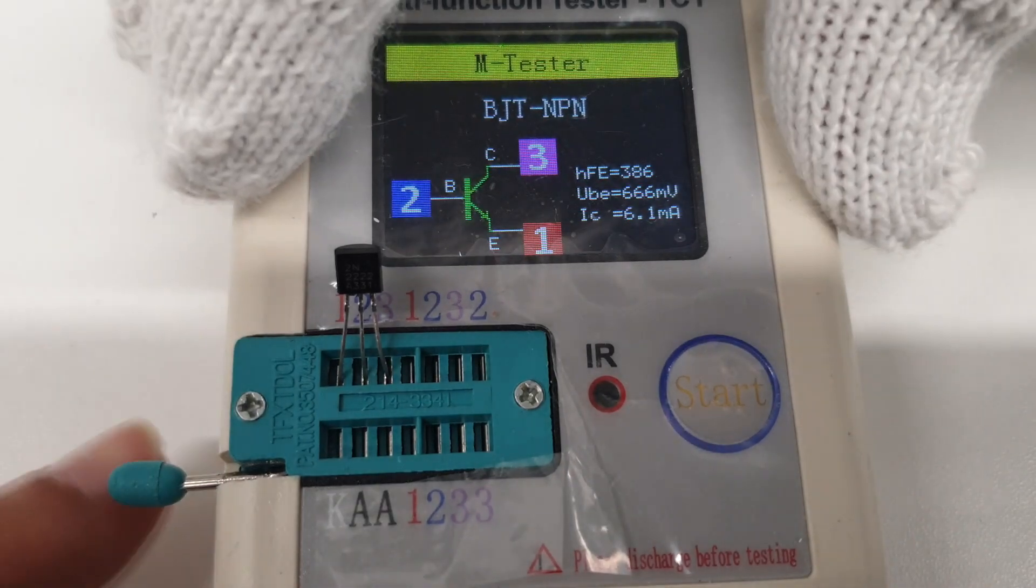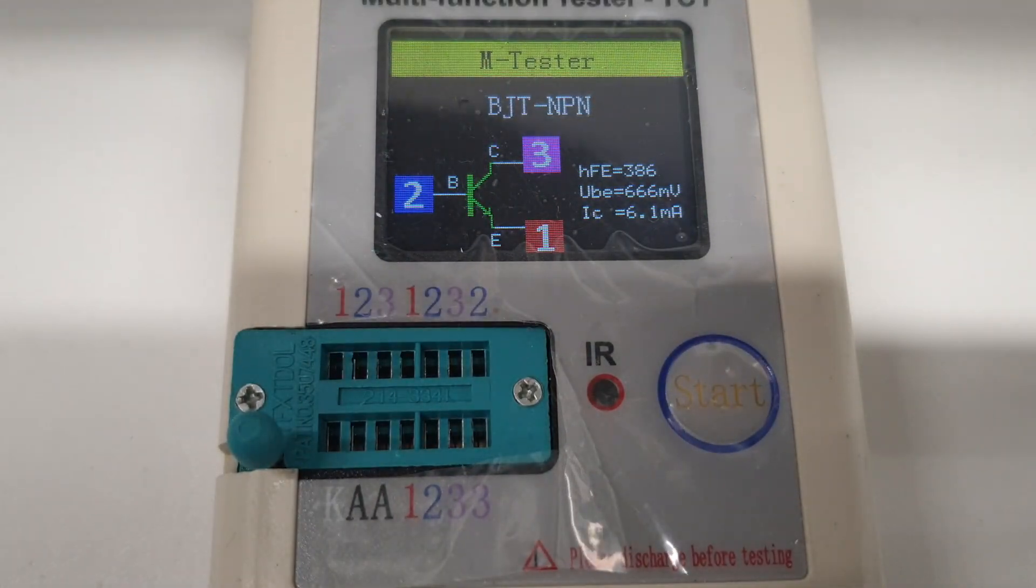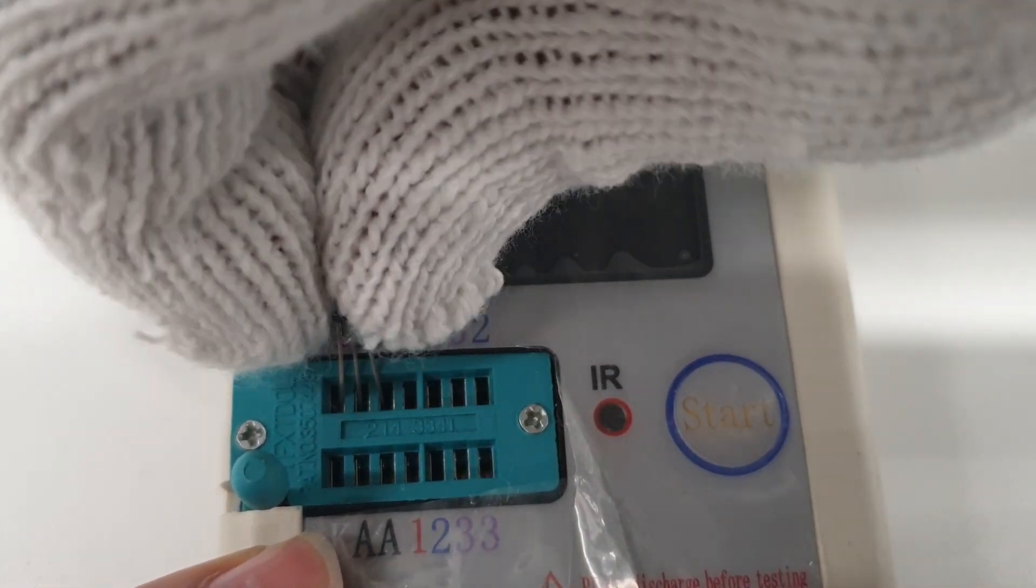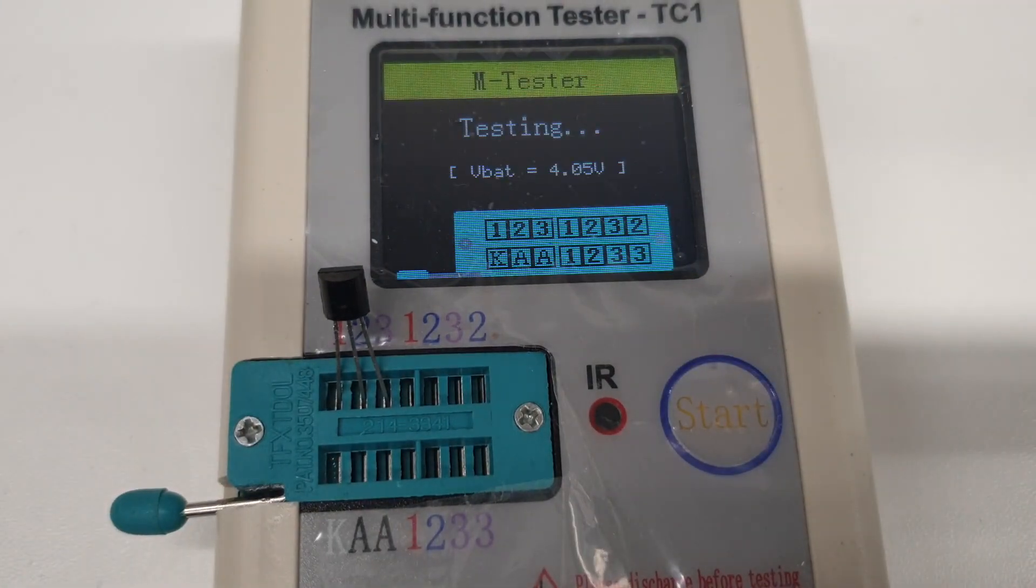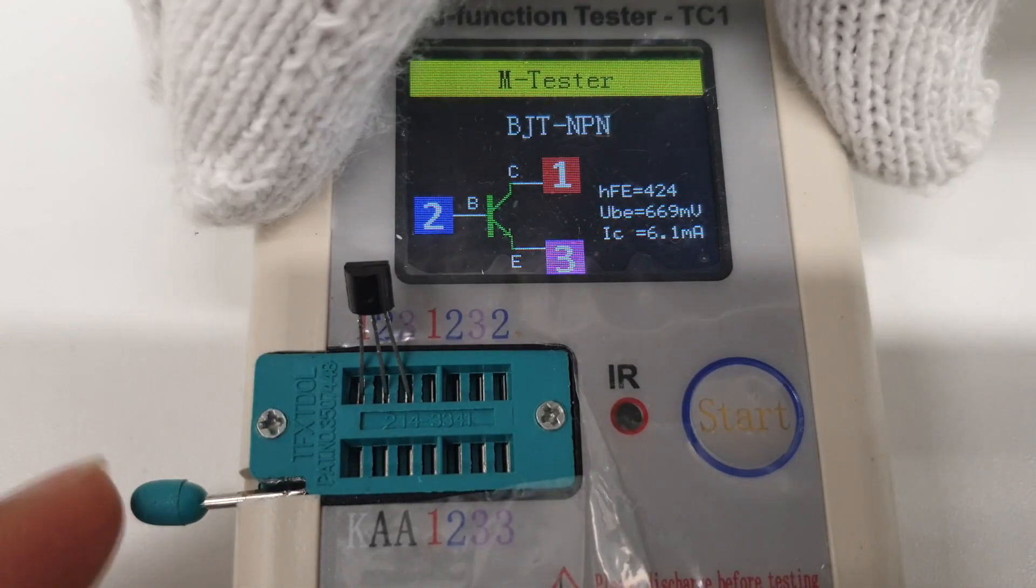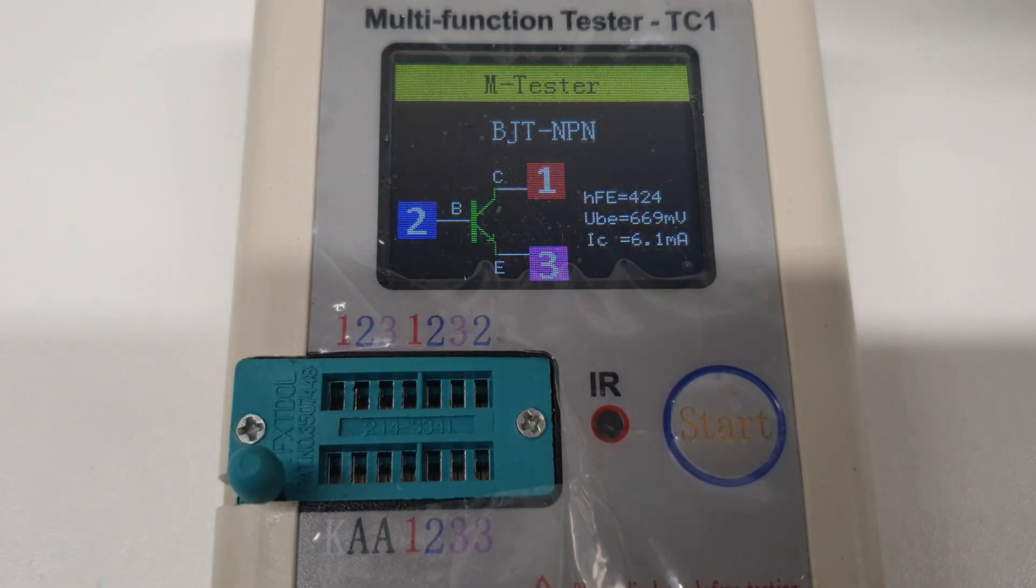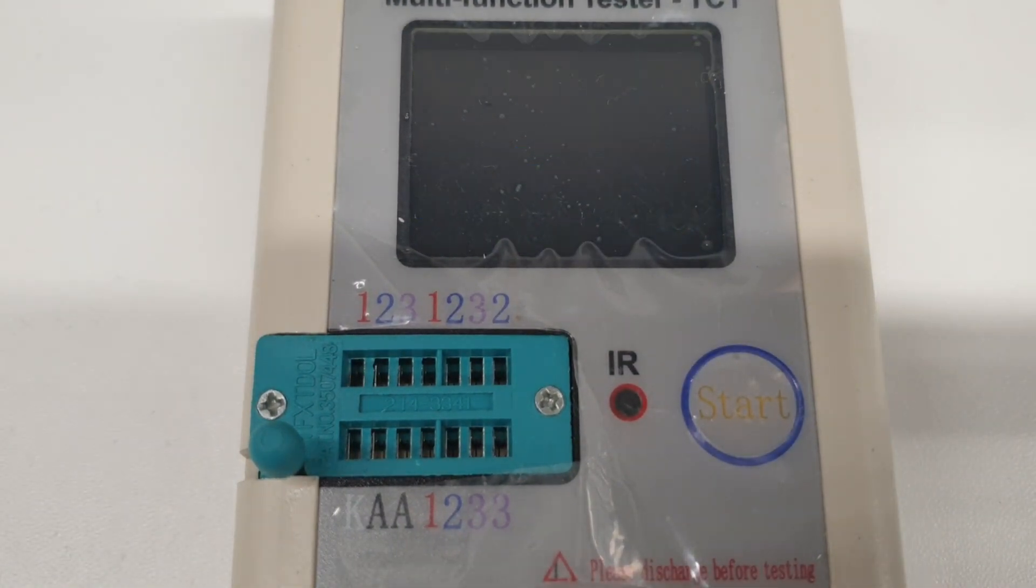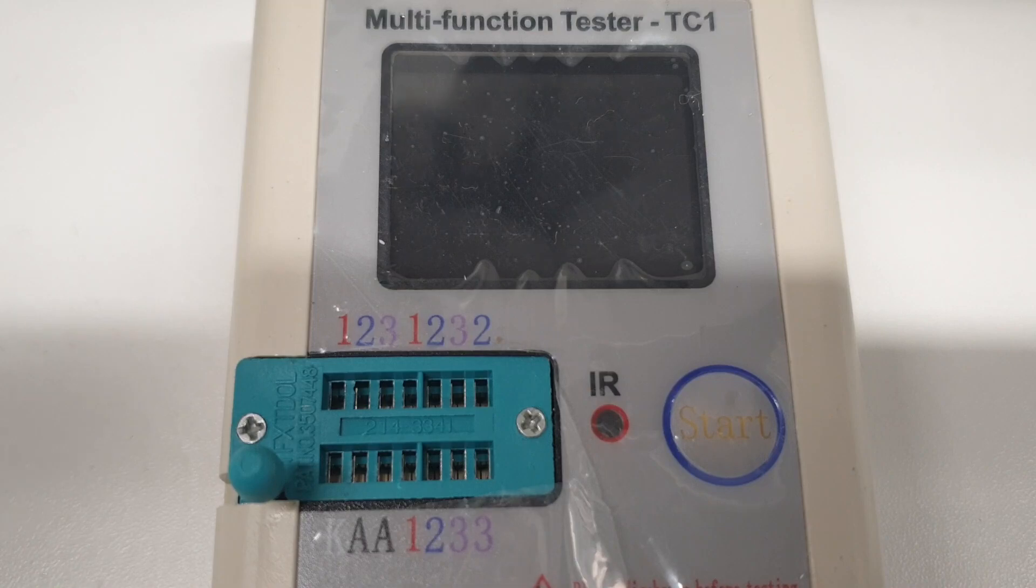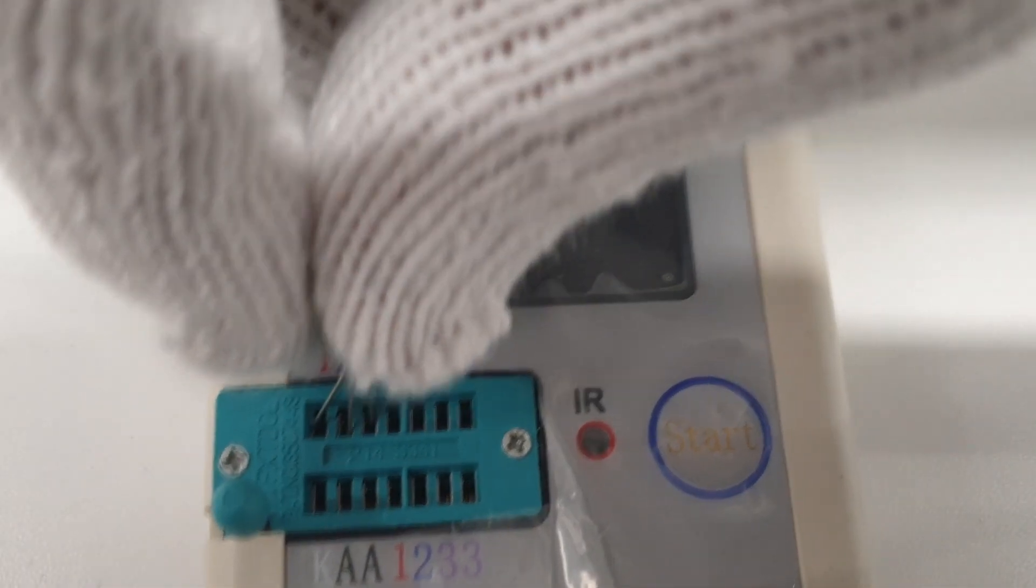Pretty much good. So let's reverse this transistor, like all the connections. Previously pin number one was the emitter. Now let's see - now pin number three is emitter. So it's very handy, I guess. It will straight away tell you if it's faulty or not, what is the hFE, and where is your emitter and base and all sorts of things. That's very good.